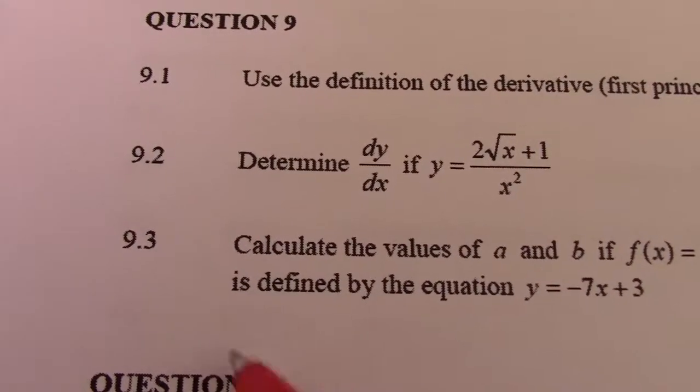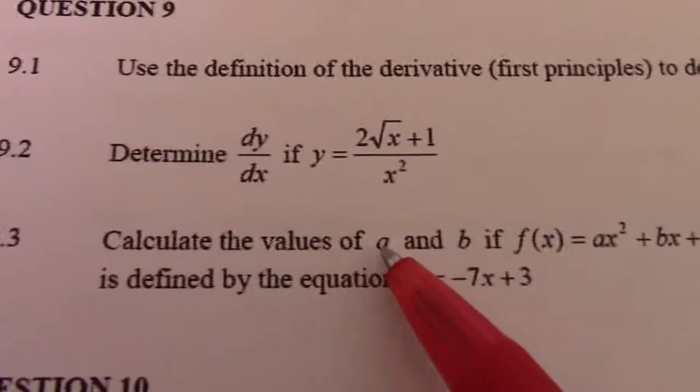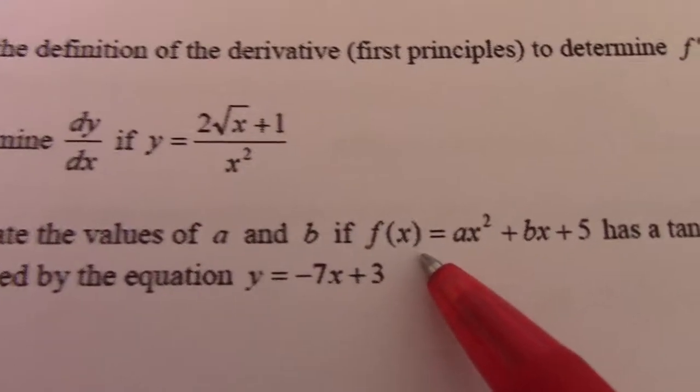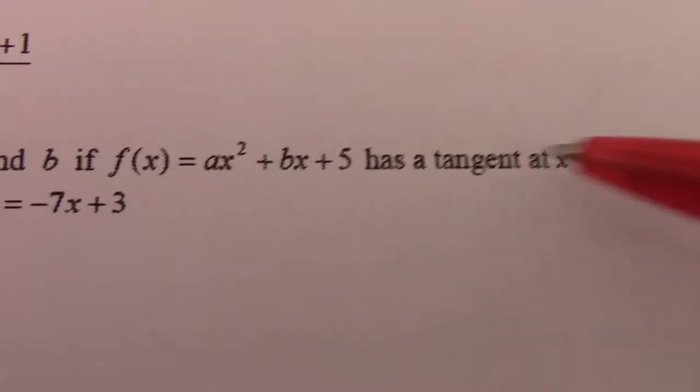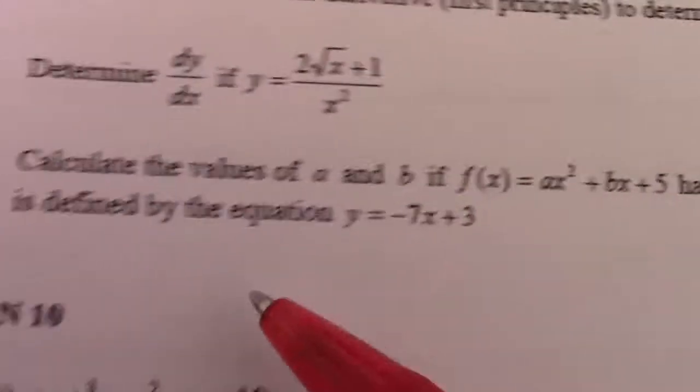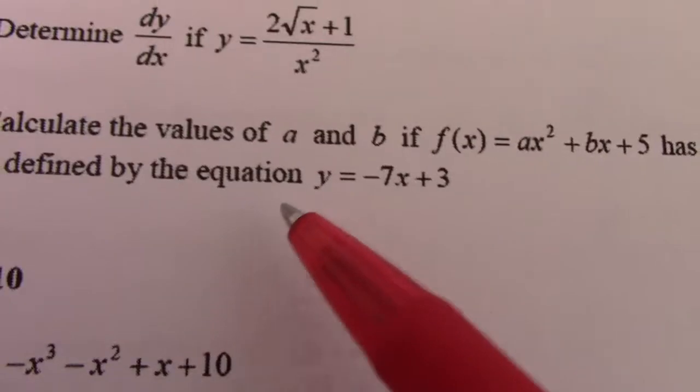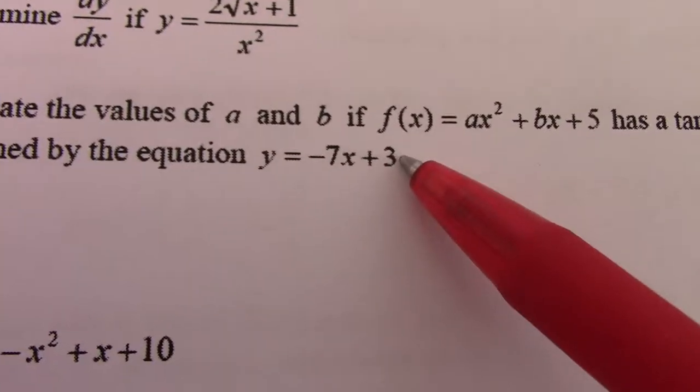Right, November 2013, 9.3. Calculate the values of a and b if f(x) = ax² + bx + 5 has a tangent at x = -1 which is defined by the equation y = -7x + 3.